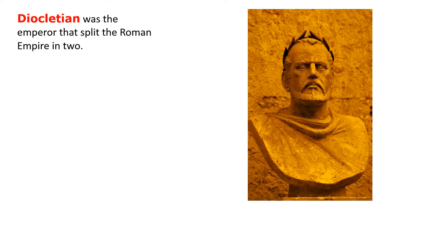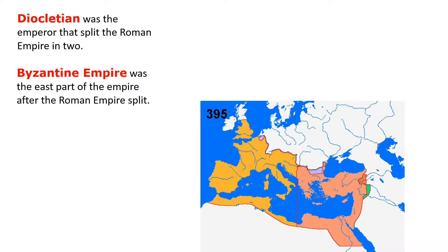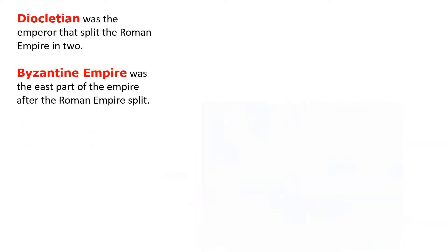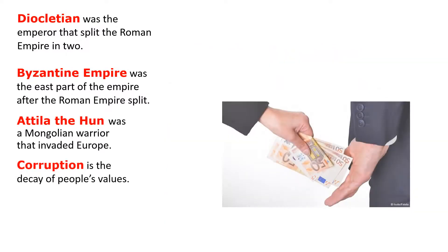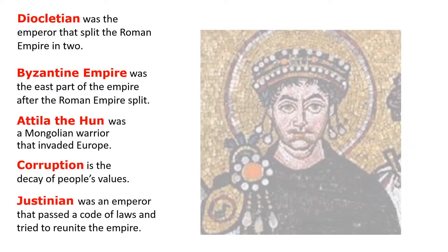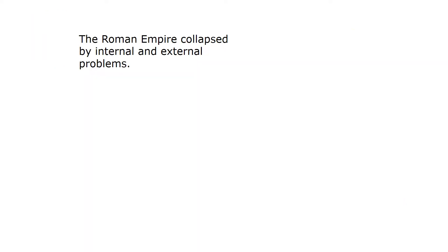Diocletian was the emperor that split the Roman Empire in two. The Byzantine Empire was the eastern part of the empire after the Roman Empire split. Attila the Hun was a Mongol warrior that invaded Europe. Corruption is the decay of people's values. And Justinian was the emperor that passed a code of laws and tried to reunite the empire. The empire collapsed due to internal and external problems.